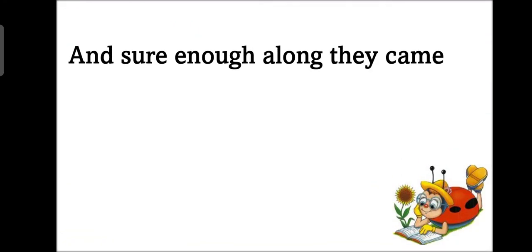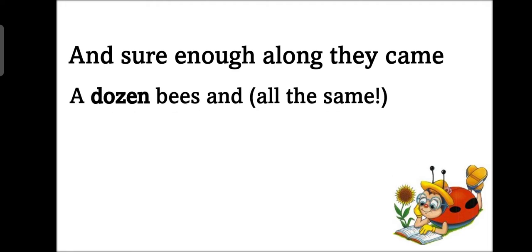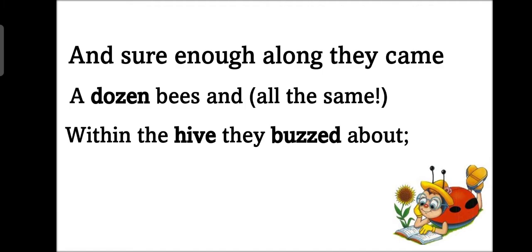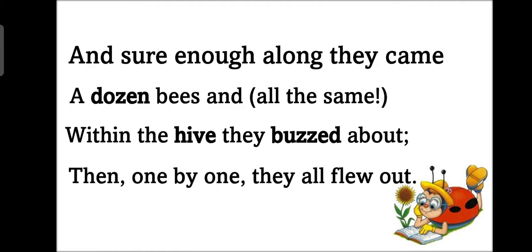And sure enough along they came. Aur unhonen ye confirm tha ki abhi wohan sab aayenge. A dozen bees and all the same. Kitni saari bees aayin? Dozen bees. It means number of bees kitni thi? Twelve. Aur sab ek jaisi lag rahi thi, same lag rahi thi, because the color of bees is black and yellow. Within the hive they buzzed about. Or wohan sab hive se matlab apne ghar se kya kar rhe thi? Aawaz kar rhe thi, kaisi aawaz? Buzzed jaisi.